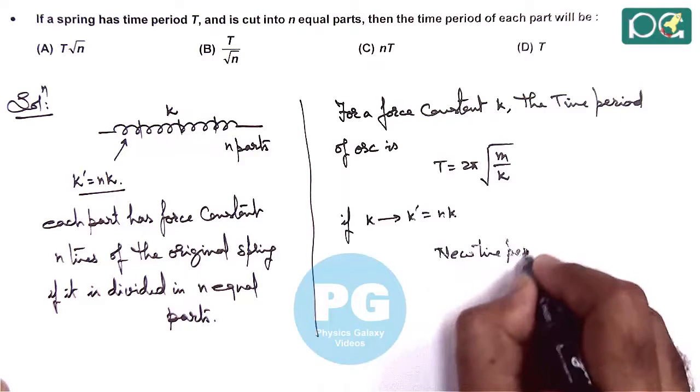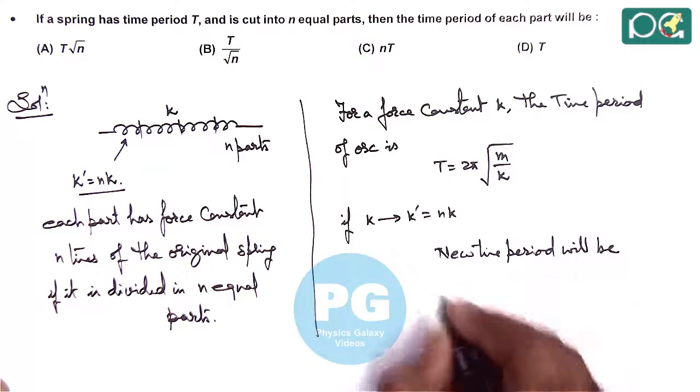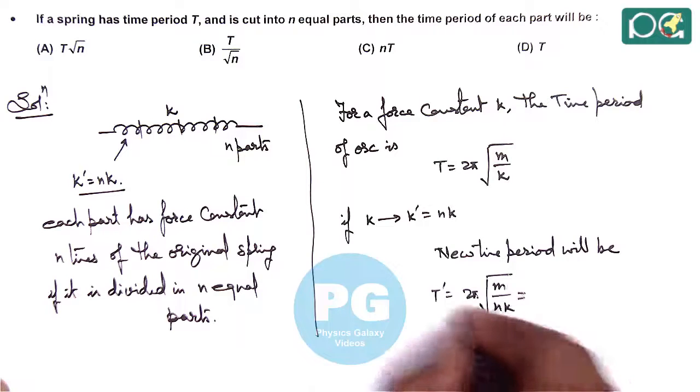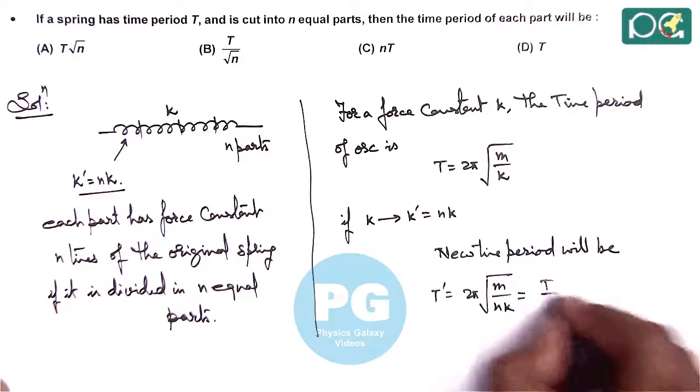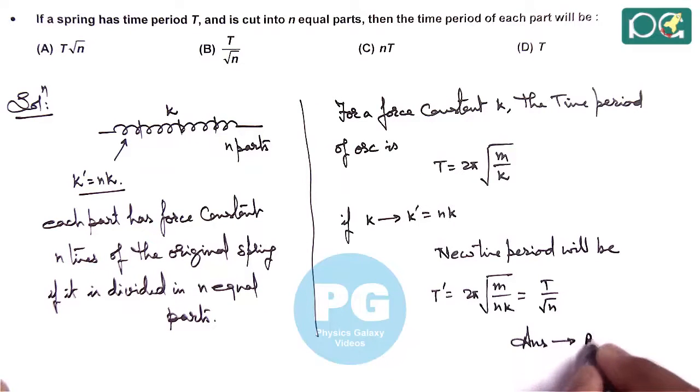New time period will be T dash equals 2π root of m by nk. So this can be compared as T by root n. So in this situation the answer to this question is option B.